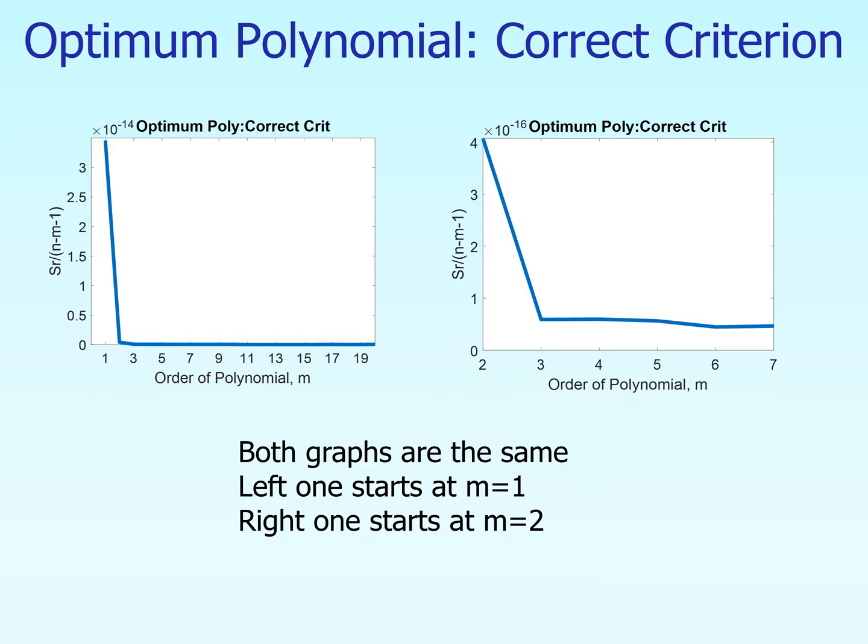Again, I want to make sure that you understand that both of these graphs are exactly the same. This one starts with m equal to 1, and this starts with m equal to 2. What we are plotting here is this quantity called Sr divided by n minus m minus 1, which can also be written as Sr divided by n minus m plus 1. We are plotting this quantity here.